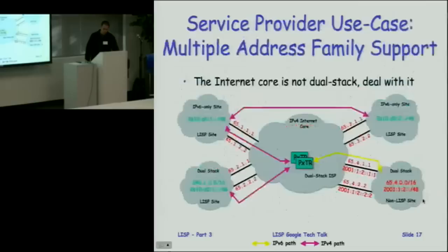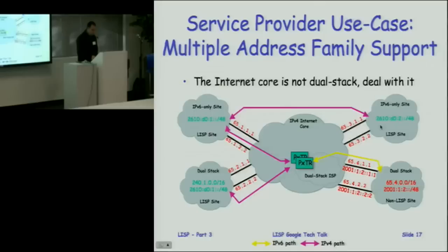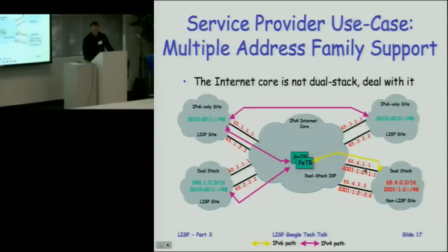The service provider use case: a service provider wants to support multiple address families, but the internet core is not dual stack — we've tried for 13 years and it's not going to happen. If you have an IPv6-only site running LISP on both sides, the encapsulation path uses an IPv4 outer header with an IPv6 inner header. If an IPv6-only site wants to talk to a dual-stack non-LISP site, it encapsulates to a proxy box over IPv4, which then forwards natively on IPv6.